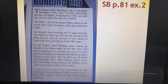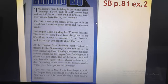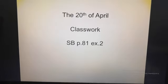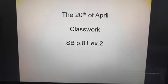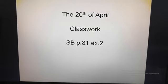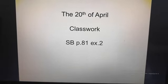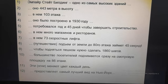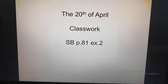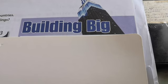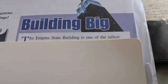You have the text about the Empire State Building. Take your copybook and write down the date: the 20th of April, classwork, student book, page 81, exercise 2. Then listen carefully to the text, because you will need to work with the translation.